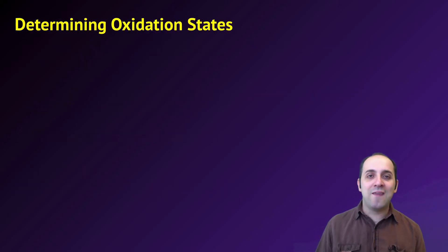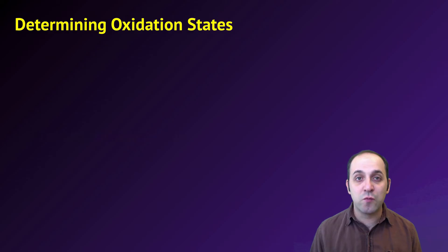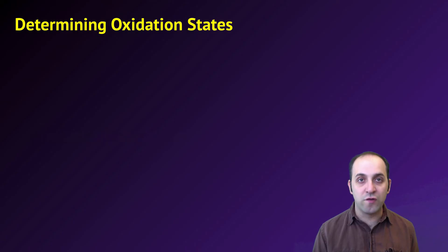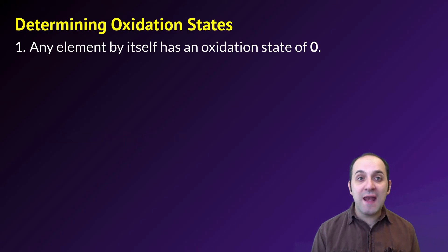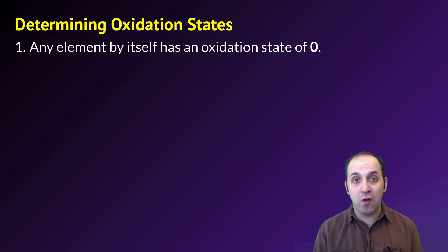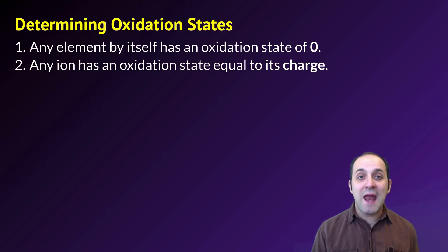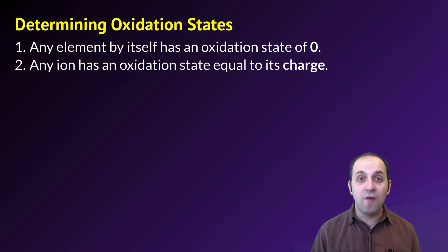Before we get into looking at the individual types of redox reactions, we need to be able to determine the oxidation states of elements in compounds. We've already dealt with this a little bit when we talked about naming and formulating compounds, but let's go in and formalize the rules. The first rule is that any element by itself has an oxidation state of zero — even if it's a Brinkelhoff element and it's in pairs, if it's by itself, it's got an oxidation state of zero. The second rule is that any ion will have an oxidation state that's equal to the charge of that ion.